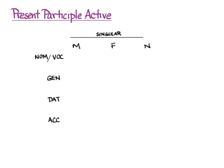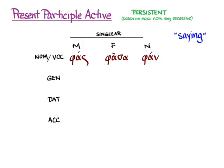The present participle active will have persistent accent based on the masculine nominative singular, if you use recessive rules. And it will mean saying. Of course it will do all the things that any participles that you've learned can do. And it's going to look like the participle of ἵστημι. And that means it also looks like the illustrative participle of thematic verbs. So we get φάς, φᾶσα, φάν in the nominative vocative singular.